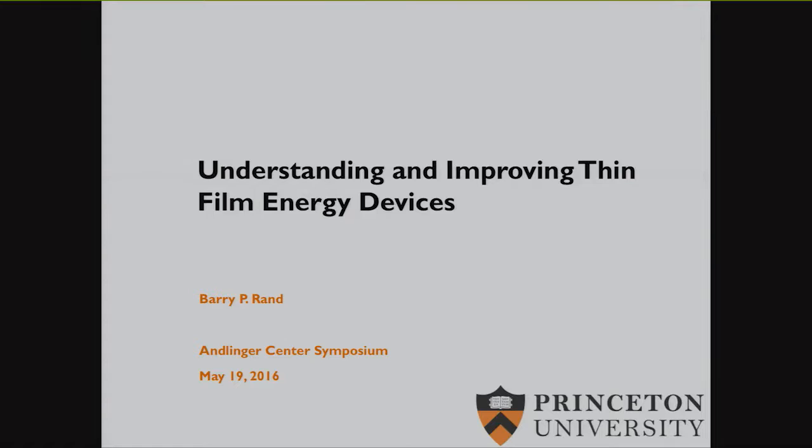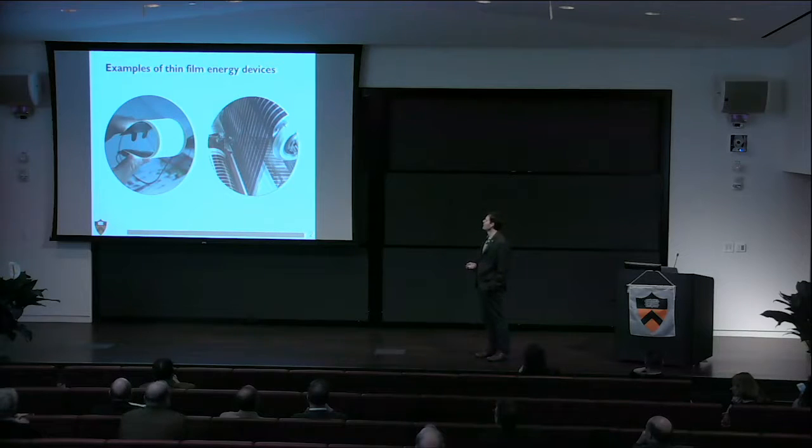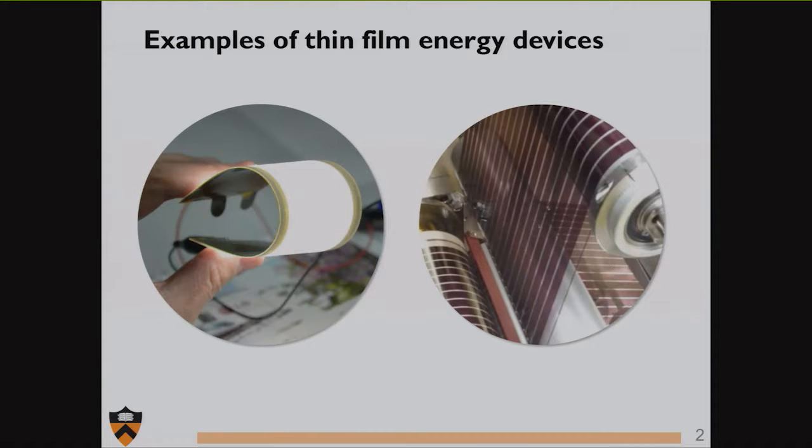First, what's a thin film energy device? The two most prominent ones I work with, though not an exhaustive list, are thin film light-emitting devices, particularly for solid-state lighting, as well as thin film photovoltaic devices or solar cells. Here's an example of a roll-to-roll coated module of thin film polymer-based organic solar cell.